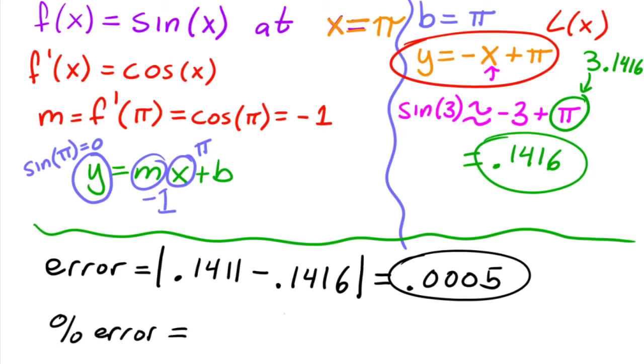Is simply equal to that error, 0.0005, over the actual, which is 0.1411, times 100, giving us 0.3545 or 0.444 percent. And that's it.